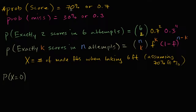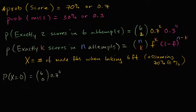That even though you have a 70% free throw percentage, you make none of the shots. You could calculate this through common sense, but just to make things consistent, I'll write it out. This is going to be six choose zero, times 0.7 to the zeroth power, times 0.3 to the sixth power. Six choose zero is one, and 0.7 to the zero is also one, so you're just left with 0.3 to the sixth power.